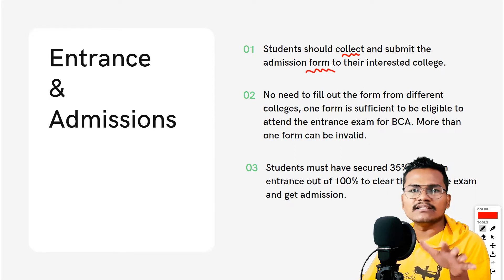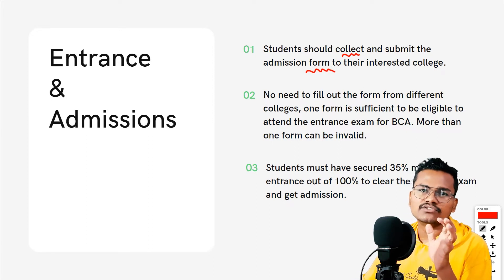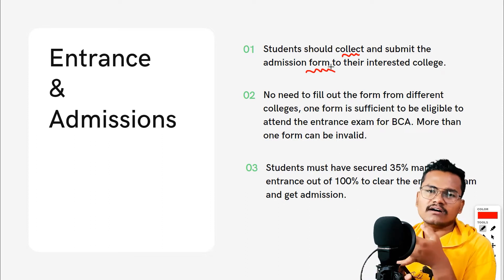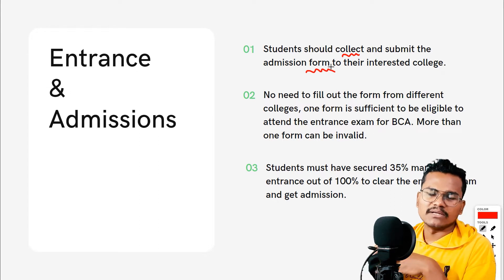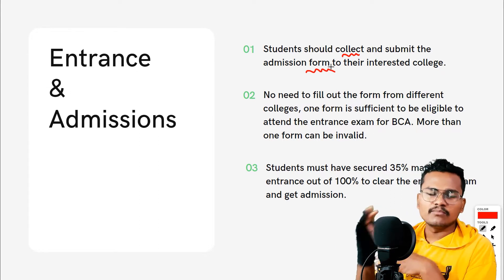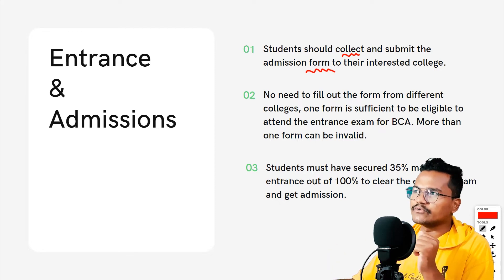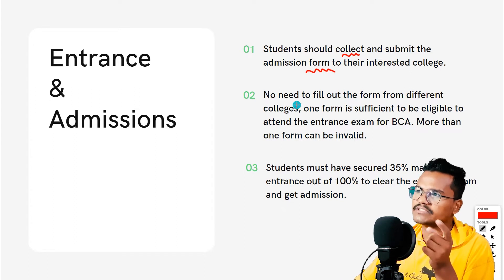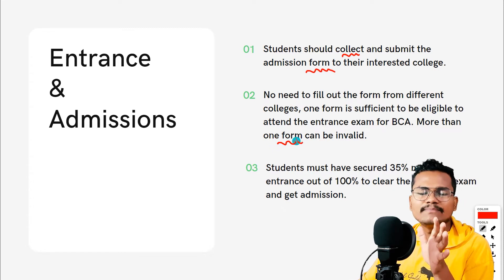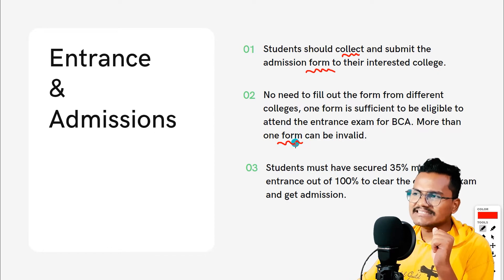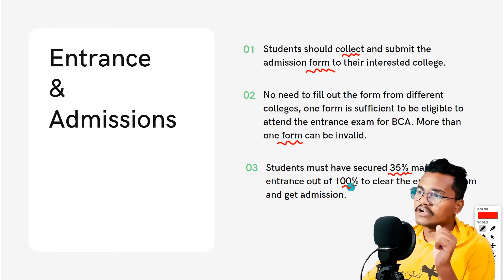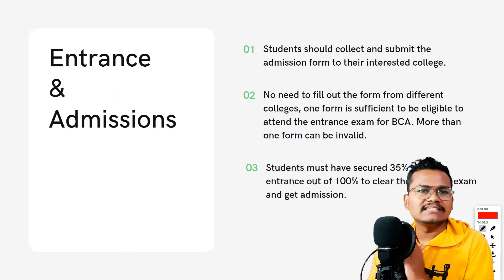In Nepal, many colleges for BCA have their own admission process. Some colleges hold entrance exams, others do not — admission may be based on your Plus Two results. The entrance exam passing mark is 35% — meaning 35 out of 100 marks. Once you pass the entrance exam, you are eligible for admission to BCA colleges.